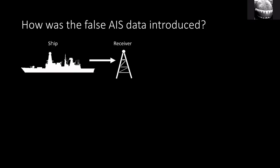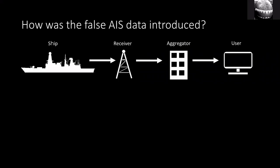So where was this fake AIS data introduced into the system? AIS is a relatively simple chain: the ship broadcasts its position, which is picked up by receivers — also by nearby ships — but typically ground-based receivers run by radio hams or similar. These take the data and pass it on to an aggregator such as MarineTraffic.com, who collect from many receivers and publish an aggregate view — either back to ships, or to users like you and me via web browsers or apps.